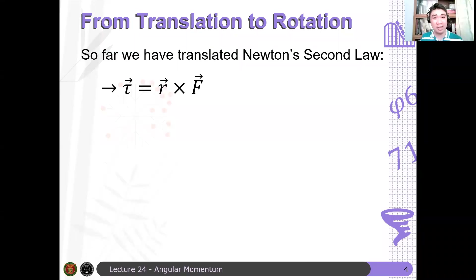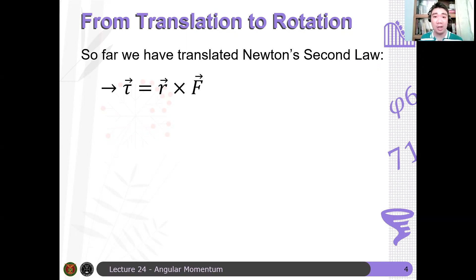Newton's second law has a rotational equivalent. Remember, torque tau is defined such that if r is the position vector from the axis of rotation towards a point where some force F is applied, then the torque is just the cross product r cross F.